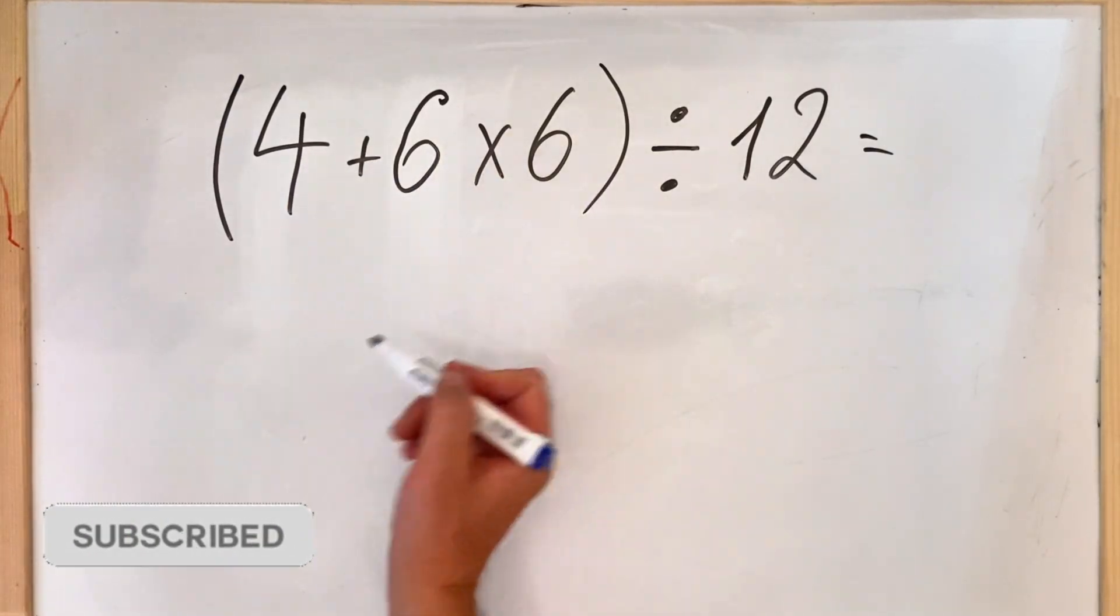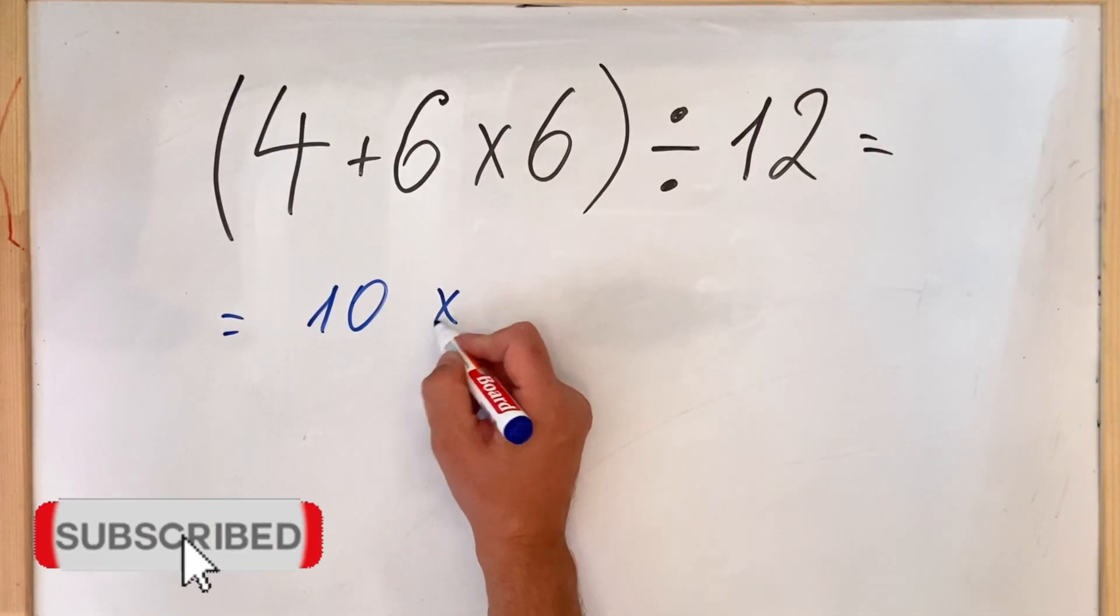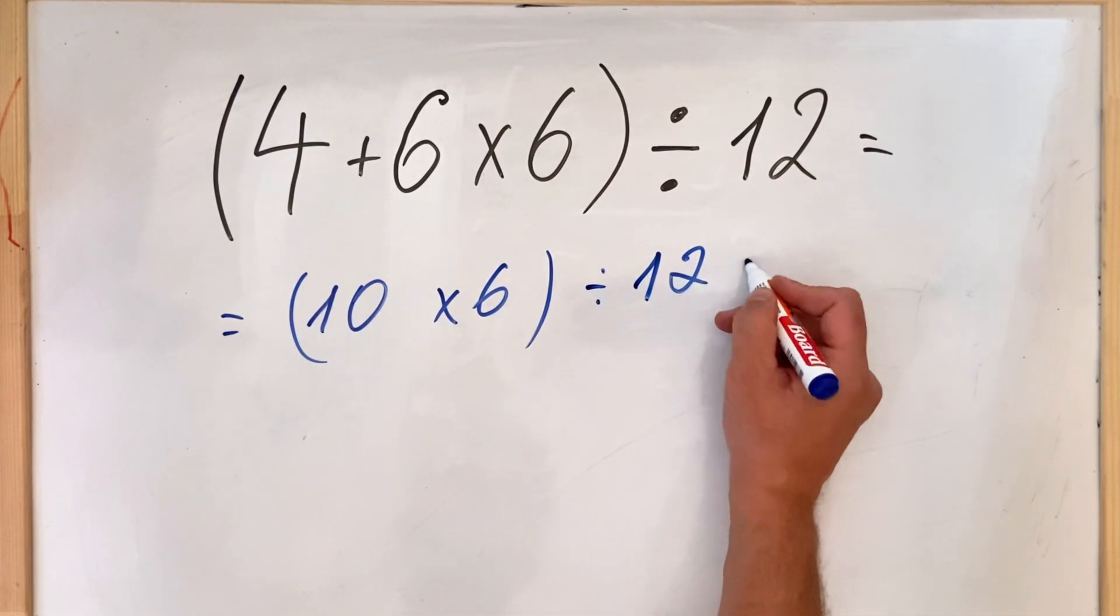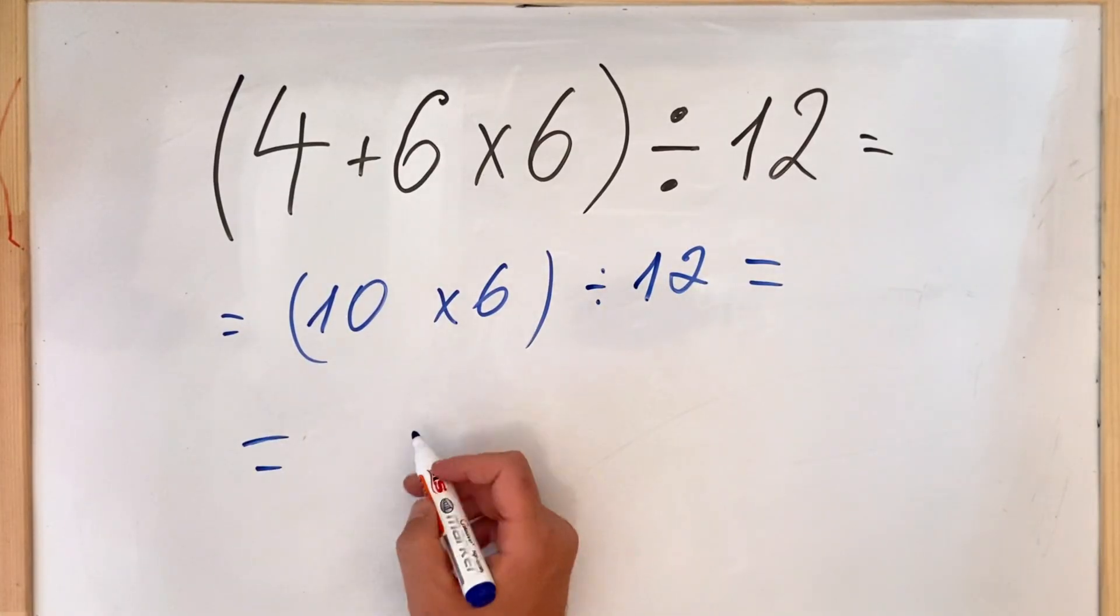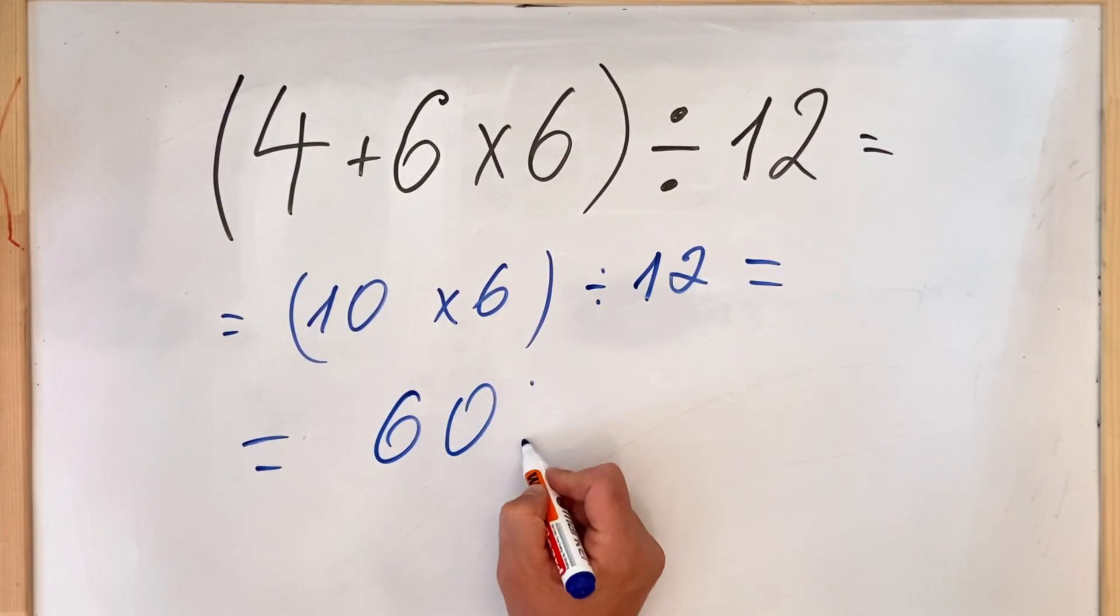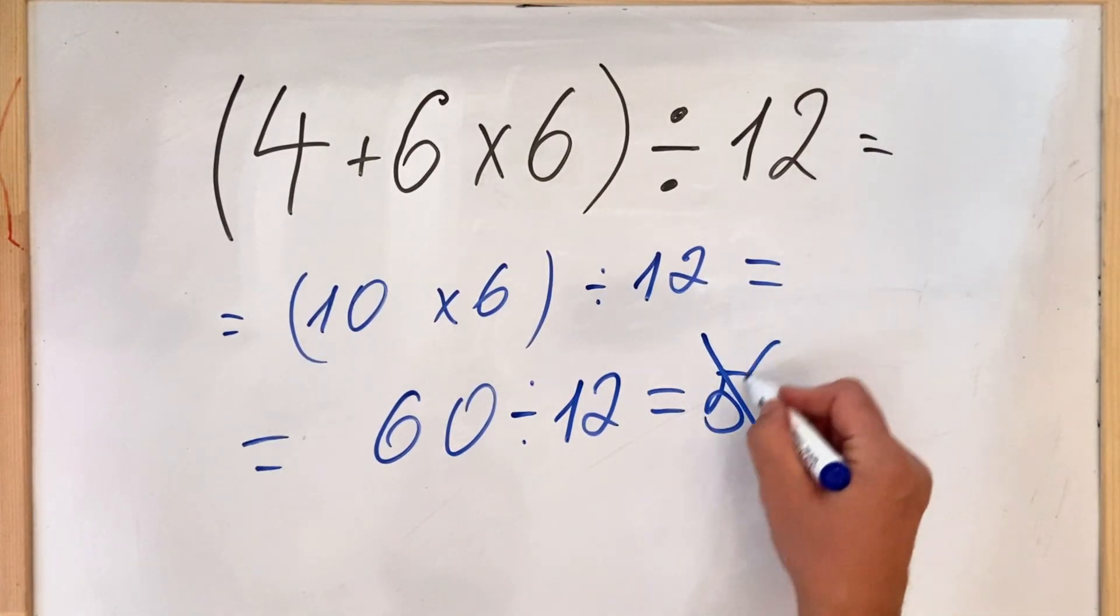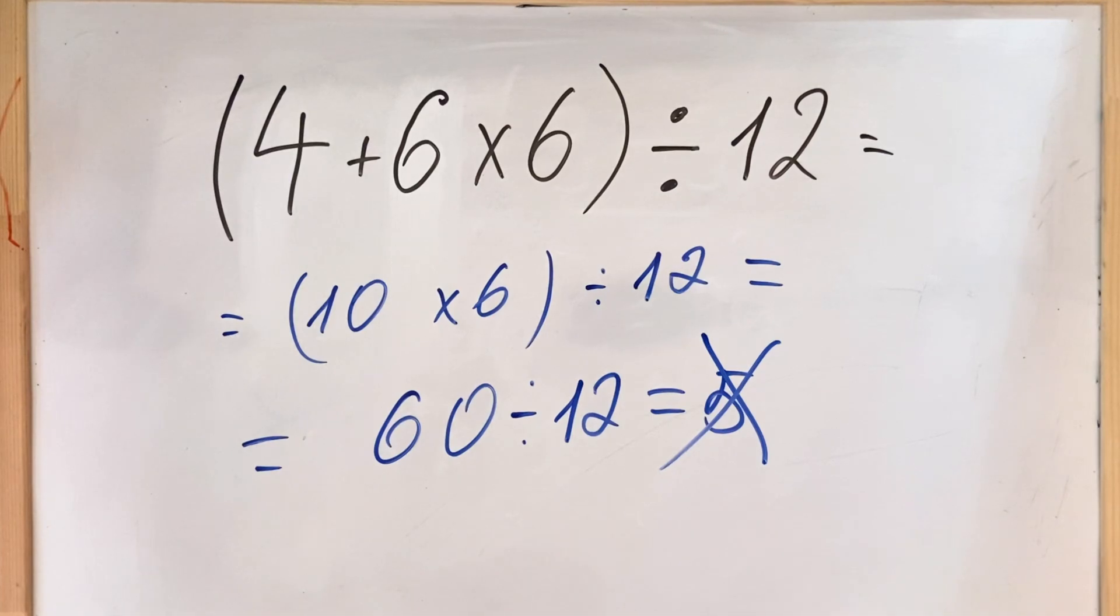So inside parentheses they do 4 plus 6 which equals 10, then they multiply by 6 and they do all the division to 12 and they get 60 divided by 12 equals to 5. But of course this is incorrect.